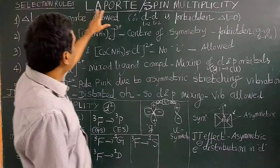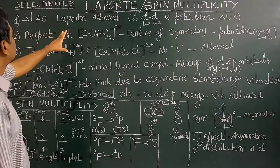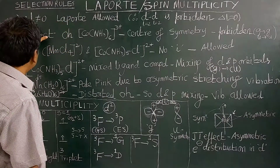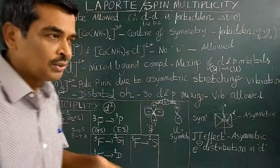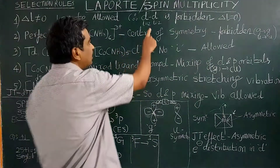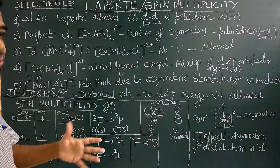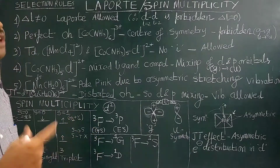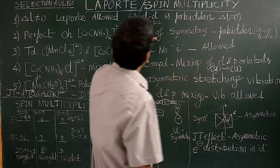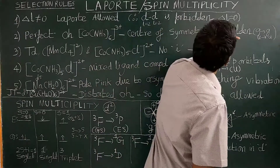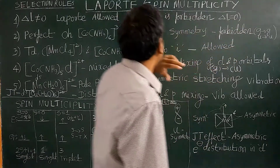Let us first see the Laporte orbital selection rule. According to this rule, transitions involving — for example, you know that d-d transition is weak. You have studied in the previous class that d-d transition is weak because the color of the complex is of very low intensity. Yesterday we saw that potassium permanganate is intensely colored because of charge transfer transition. In d-d transition, L equals 2, so there is no change in orbital quantum number.